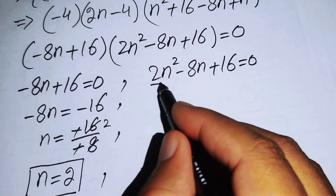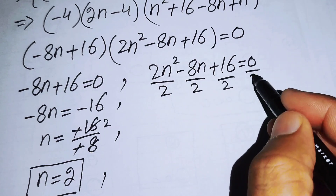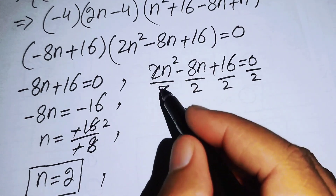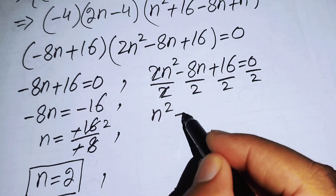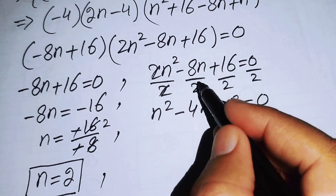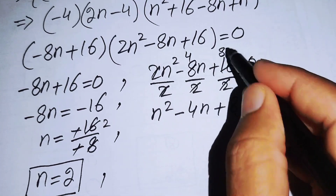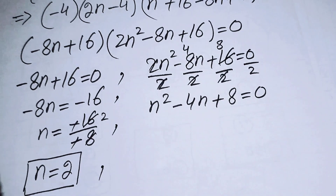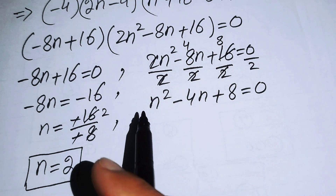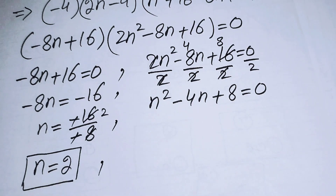To find the other roots, we solve the quadratic equation 2n² minus 8n plus 16 equals 0. Dividing each term by 2 on both sides, the 2s cancel and we get the simplified form: n² minus 4n plus 8 equals 0.